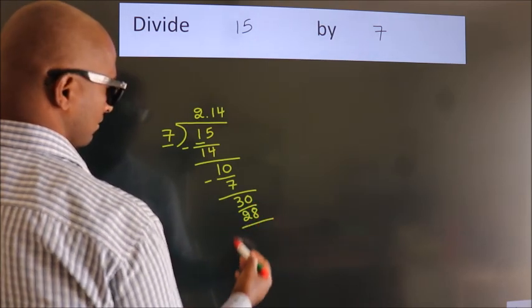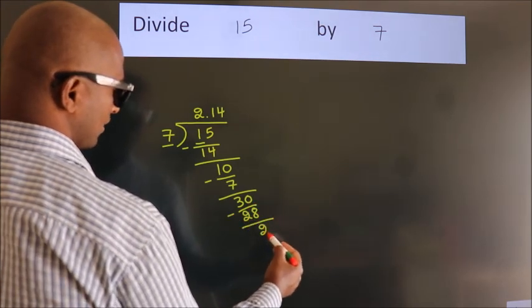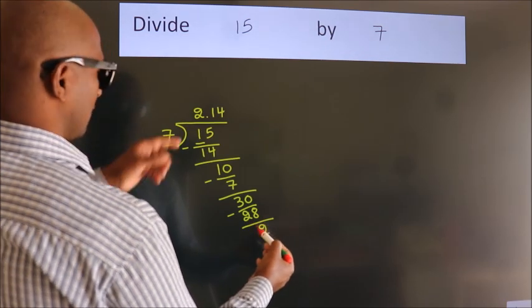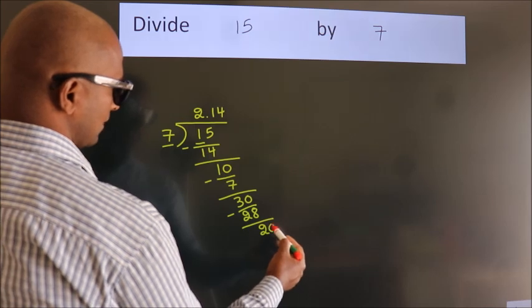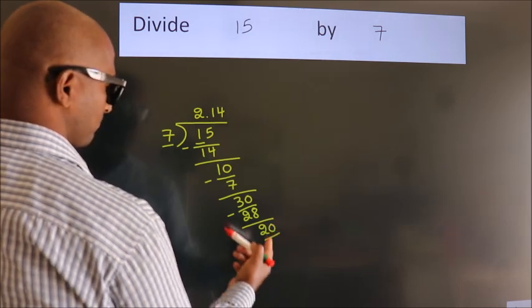Now we subtract, we get two. After this, we already have the decimal, so directly take zero. So 20.